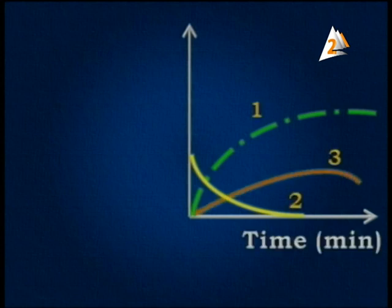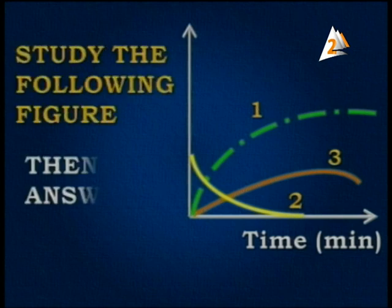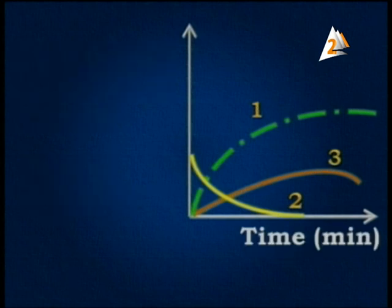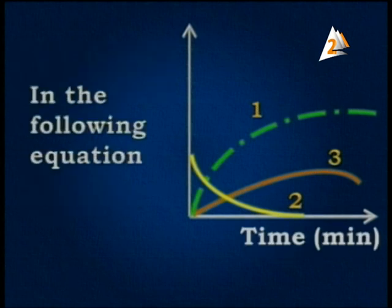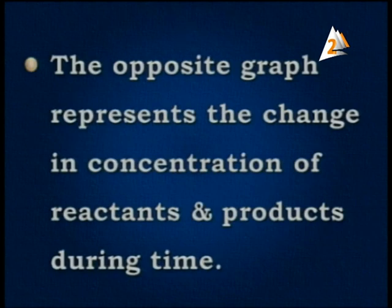We have number one, number two, and number three on the graph. The time is shown in minutes. Study the following figure then answer. We have this figure with the equation: 2X gives us 2Y and Z. The x-axis is time per minute and the y-axis represents the change in concentration of the reactant and the product during time.